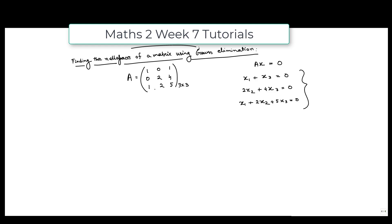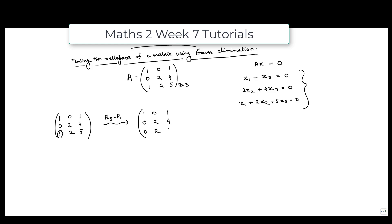Let us start doing row operations on A to find the reduced row echelon form. The first leading element of the first row is already 1, and the element in the second row, first column is already 0. So we need to make the element in the third row, first column equal to 0 by doing R3 minus R1. The first two rows remain as they are, and the third row becomes [0, 2, 4]. We can see that the second and third rows have become the same.